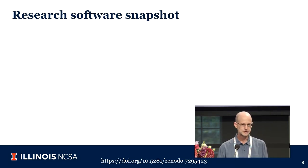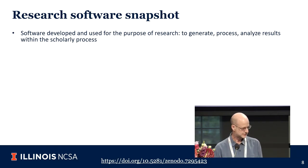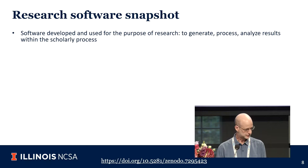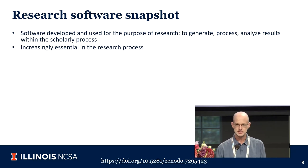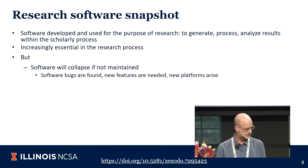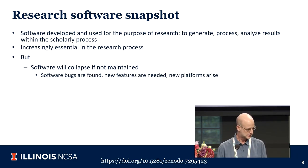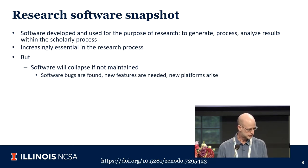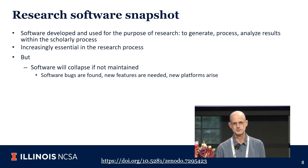Research software is developed and used for the purpose of research, often by researchers themselves, and is increasingly essential. But there are problems. Software collapses if not maintained — bugs are found, new features are needed as physics moves on and a new PDE must be included in a model, or a new platform arises: we can't just depend on CPUs anymore, we have to use GPUs, and we have to start thinking about quantum computing.